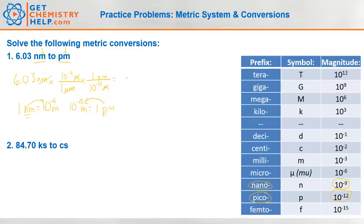Go ahead and punch that in your scientific calculator, and it'll probably tell you something like 6030 picometers. Let's go through and check our significant figures. So 6.03 — all three digits are significant, so that's 3 sig figs. This is a metric-to-metric conversion, so this is exact — it has been defined to be true, and meters to picometers is also exact.